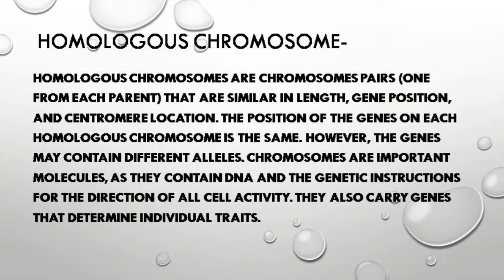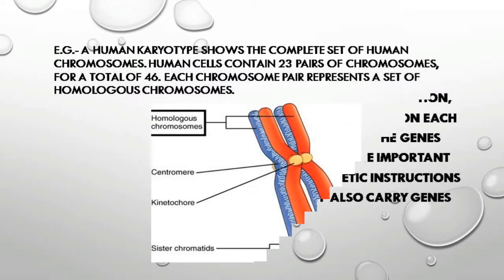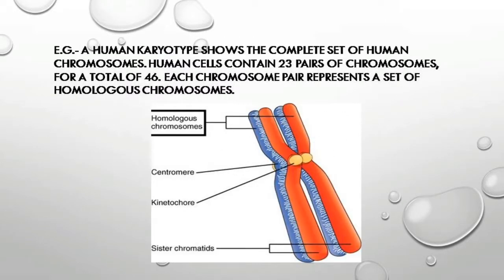The position of genes on each homologous chromosome is the same; however, genes may contain different alleles. Chromosomes are important molecules as they contain DNA and genetic instructions for the direction of all cell activity.